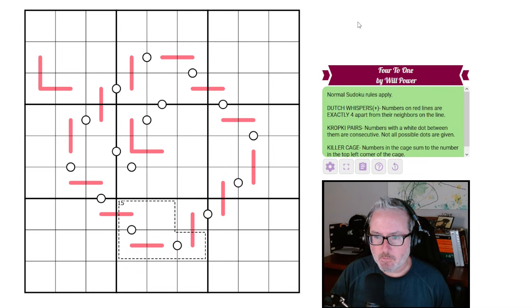Let's see what the rules are. Normal Sudoku rules apply. So every row, column, and 3x3 box will contain the digits 1-9 once each. Now we have Dutch Whispers Plus. I feel like I've done this rule set once before, but I just cannot remember. The point of Dutch Whispers Plus is that numbers on red lines are exactly four apart from their neighbors online. So unlike normal Dutch Whispers, where it has to at least be four, these are four, period. So if this was a two, this would be a six. End of sentence.